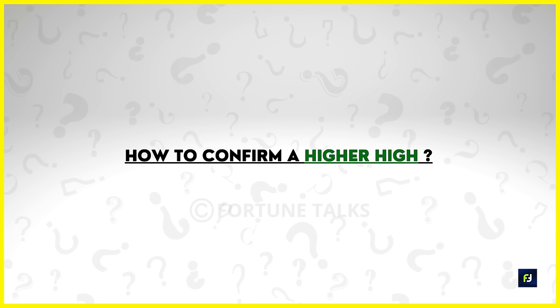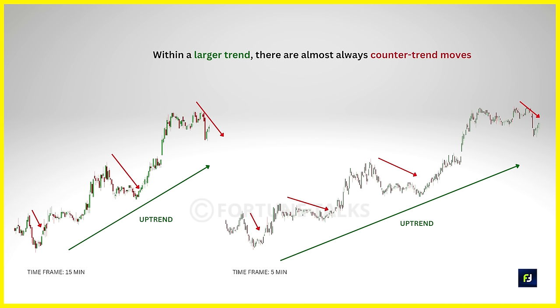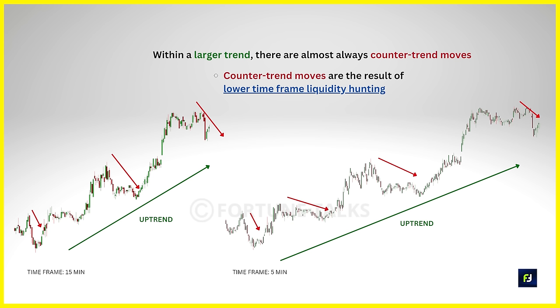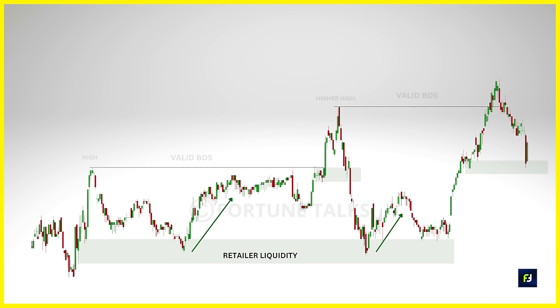Only when a bullish Break of Structure happens is the higher swing low level confirmed. A higher low is the lowest swing point which is higher than the previous swing low in a bullish trending structure. Now, price rarely moves in a straight line — within a larger trend there are almost always counter-trend moves. These counter-trend moves are the result of lower time frame liquidity hunting. Once price bounces or gets rejected from a level, it will normally target a previous short-term higher low before continuing in the direction of the longer-term trend.